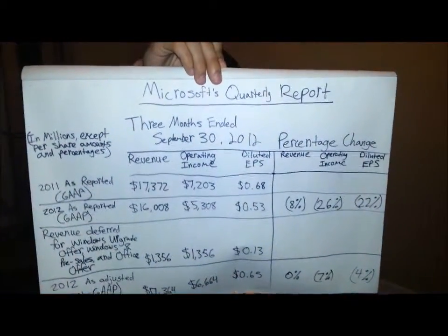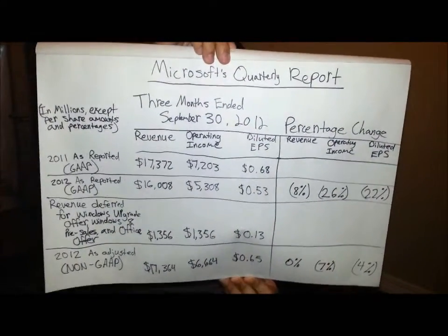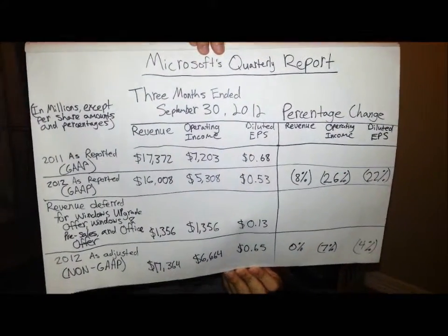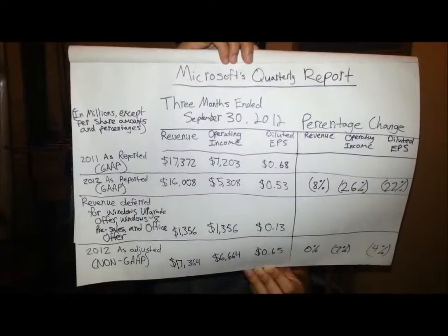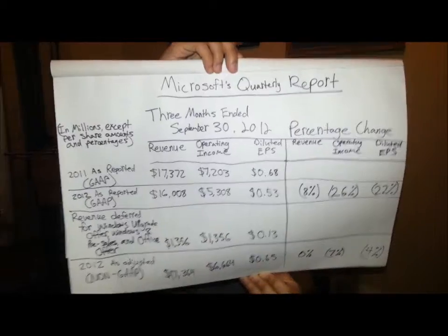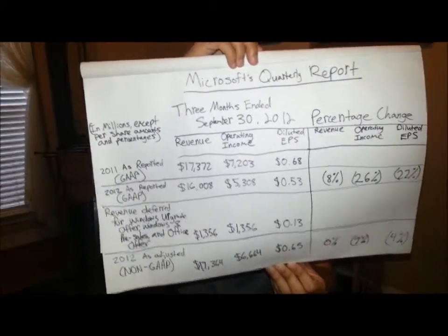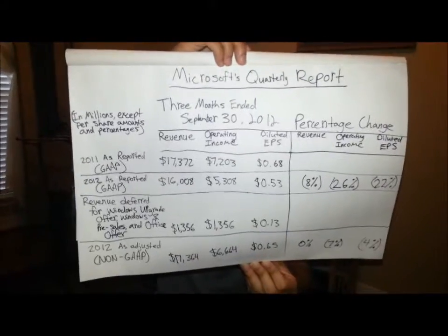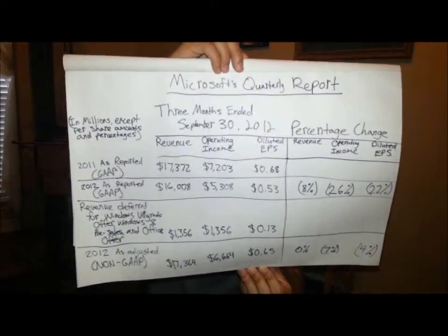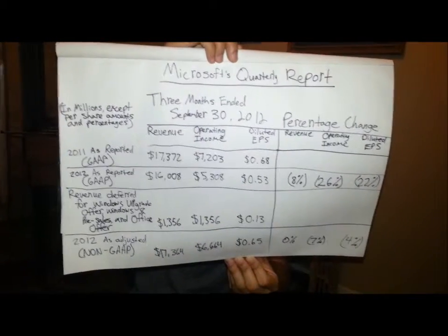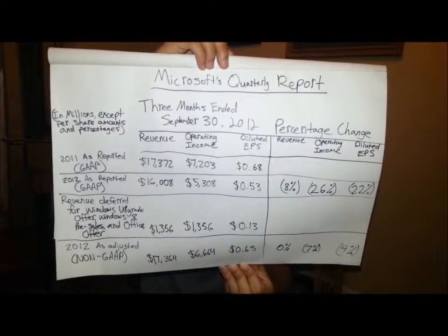Revenue is negative 8%, operating income is negative 26%, and diluted EPS is negative 22%. For revenue deferred for the Windows upgrade offer and Windows 8 pre-sales and office offer, revenue is $1,356 million, operating income of $1,356 million, and diluted EPS of $0.13.